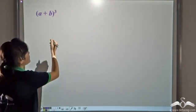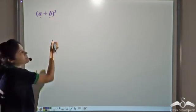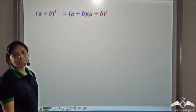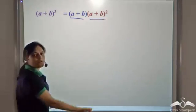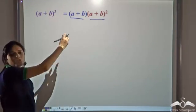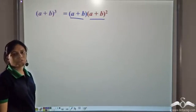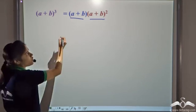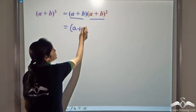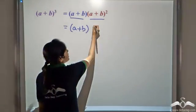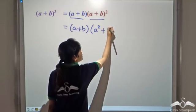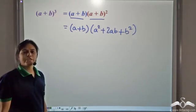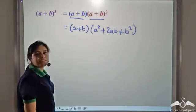We have an expression containing two terms and we need to cube it. This can be written by noting that since it is a cube, we can apply an identity. We have already learnt that (a + b) whole square is a² + 2ab + b². So let us apply this identity here.